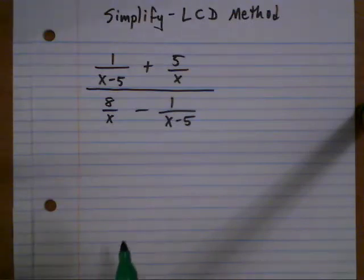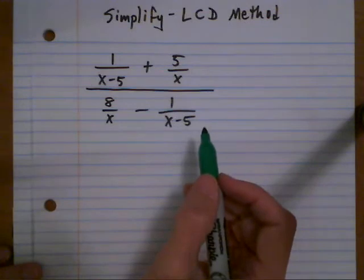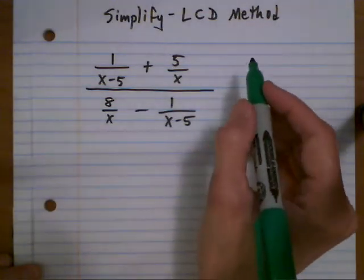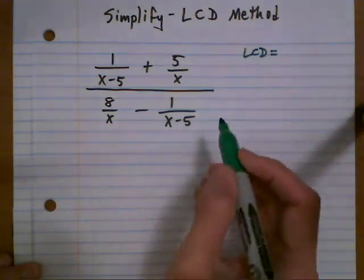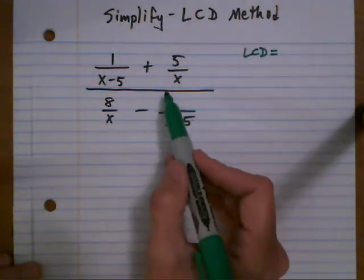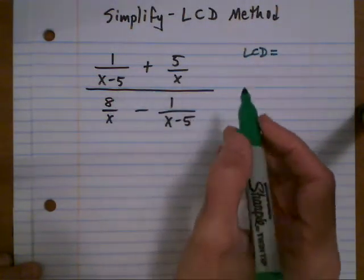Here's another problem where we'll simplify a complex fraction using the LCD method. First thing we want to do is figure out the LCD. So the LCD for all denominators here is x and x minus 5.